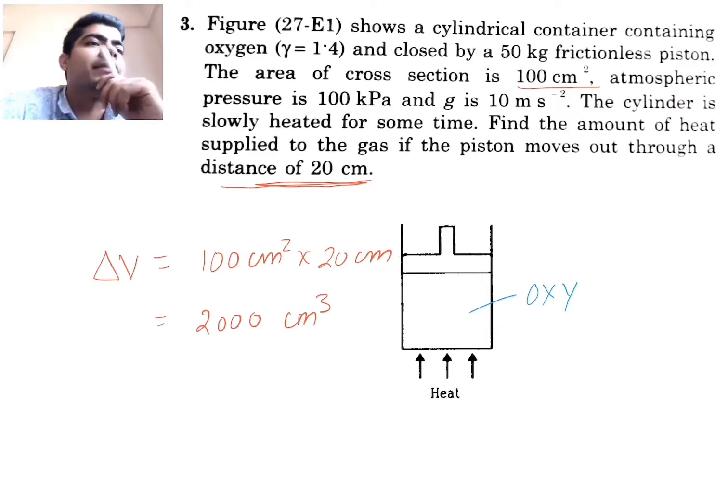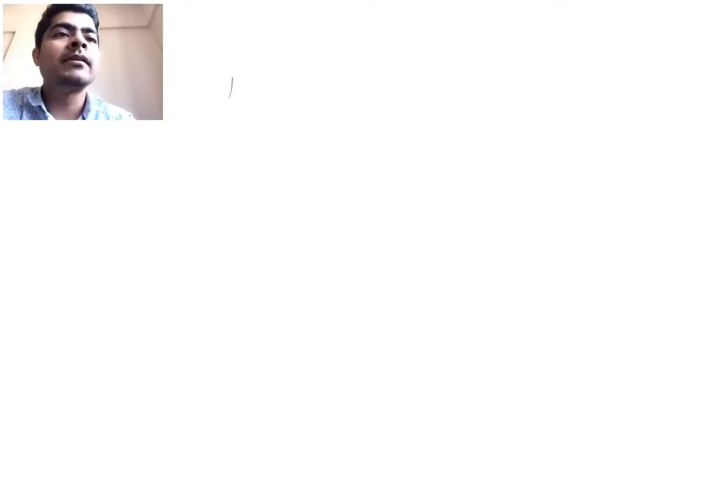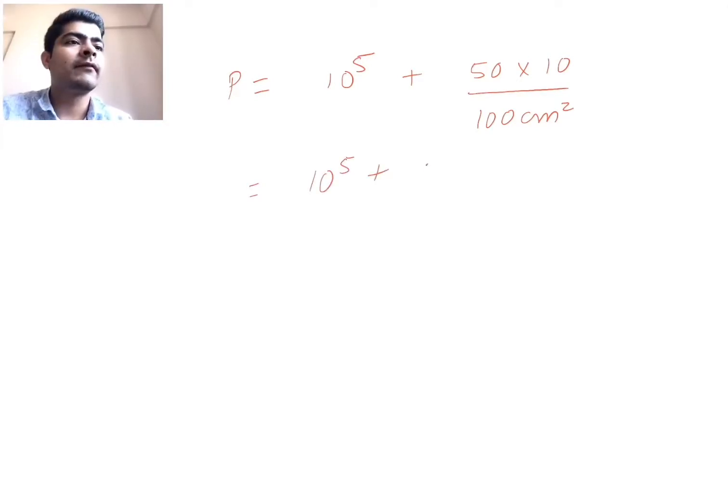Now similarly, the mass of the piston is given to be 50 kg, so we can find the pressure. So putting in this formula P equal to P0 plus Mg by A, we will get P equal to P0 is 10 power 5 Pascal given, plus Mg, M is 50 kg into G is 10, divided by area that is 100 cm squared.